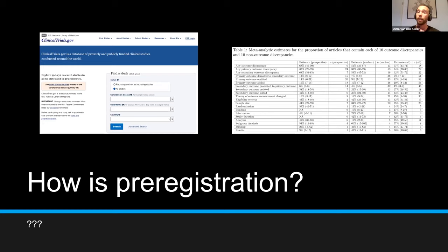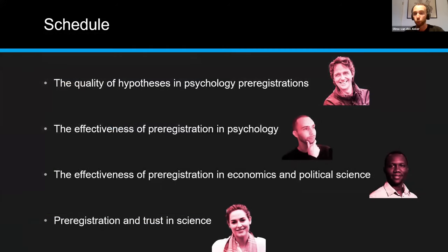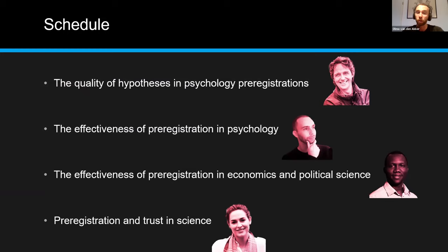So how is that in the social sciences? Well, that is the topic of this session. We have four talks. We start with Marcel van Assen on the quality of hypotheses in psychology pre-registrations. Then I will talk about the effectiveness of pre-registration in psychology. George Ofosu will talk about effectiveness in economics and political science. And finally, Sarah-Ann will close with a talk on pre-registration and testing science.